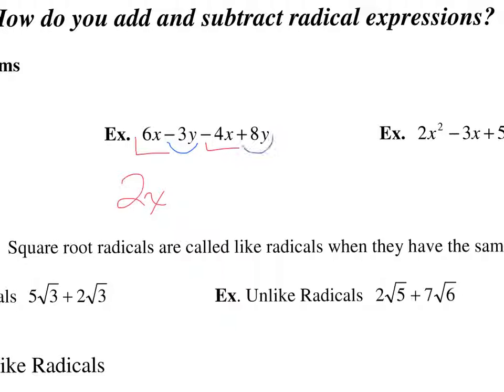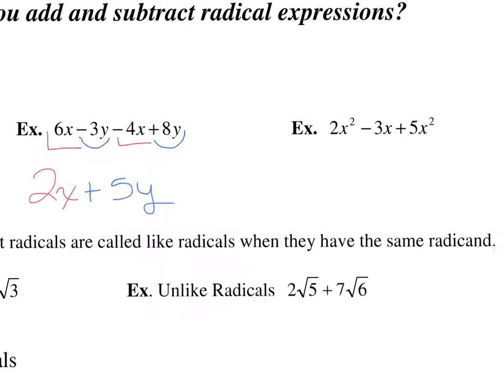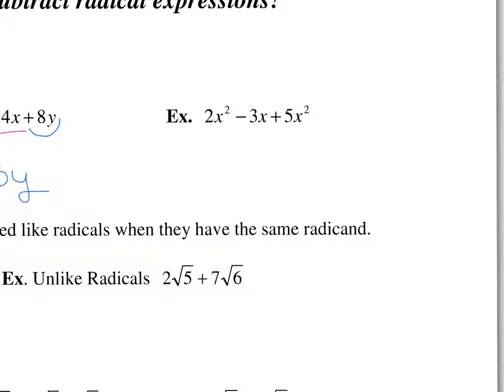Negative 3y and positive 8y are like terms. When we add negative 3 and positive 8, we get positive 5, and the variable stays the same. The 2x squared and 5x squared are like terms — they both have x squared. When we add them, we add the 2 and the 5; the variable stays the same, giving us 7x squared. The negative 3x doesn't have any like terms, so it's just tacking on.